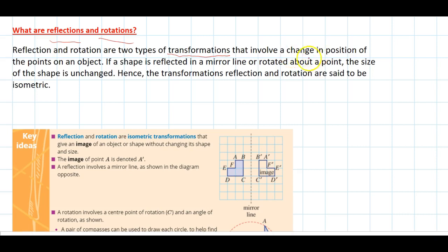They involve a change in position of the points of an object. If a shape is reflected in a mirror line or rotated about a point, the size of the shape is unchanged. Hence, transformations reflection and rotation are said to be isometric. Isometric means they are unchanged.